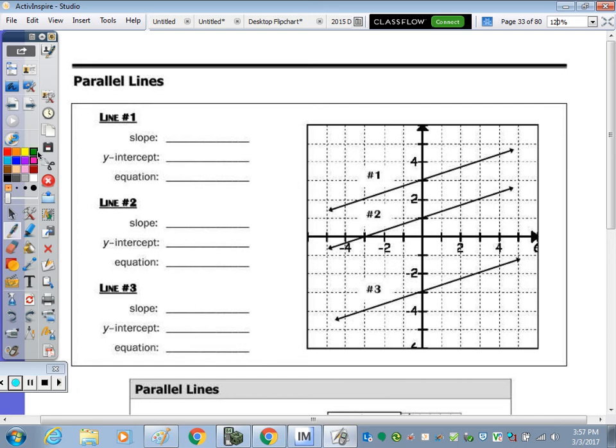So let's focus on the intercept because that's really easy. The intercept of line 1 is 3. The intercept of line 2 is 1. And then the intercept of line 3 is negative 3.